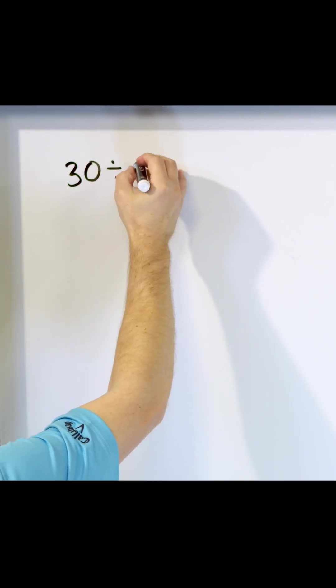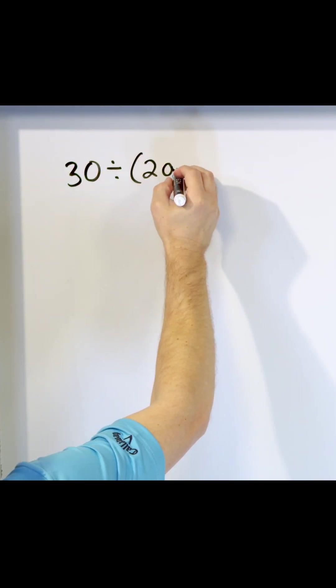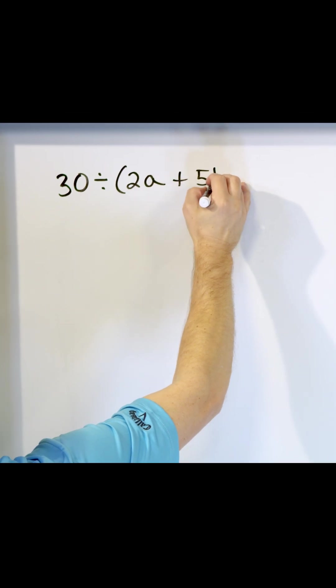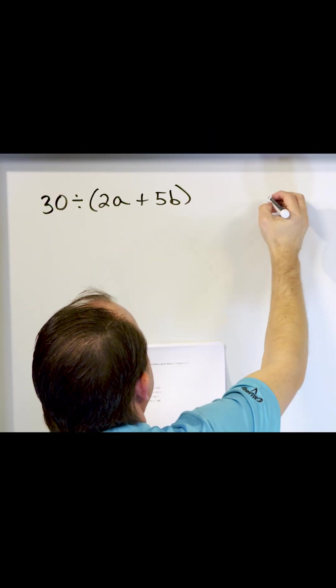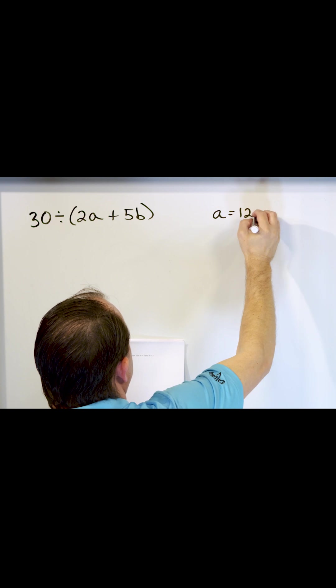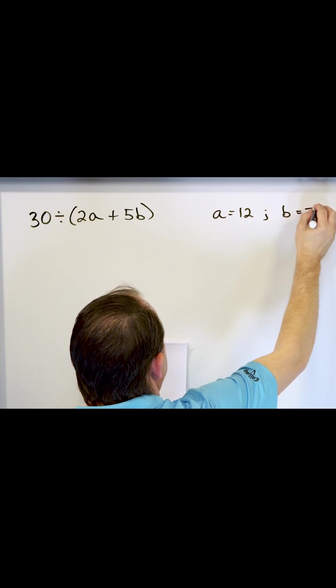30 divided by, here we have 2 times A plus 5 times B, and I'm going to tell you that A is 12 and B is negative 6.